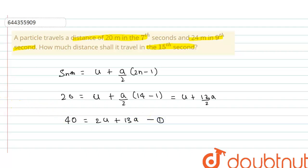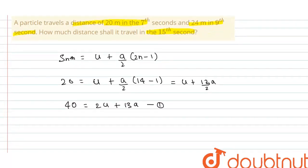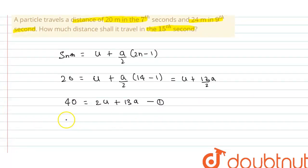First equation. Now, according to the question, distance traveled in 9 seconds is 24 meters. So 24 is equals to u plus a by 2, 9 into 2, 18 minus 1.